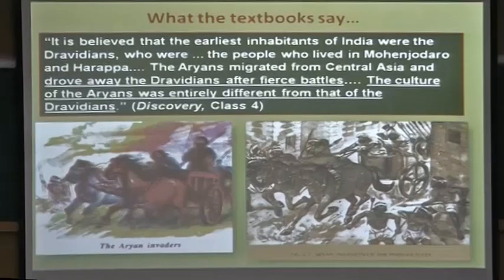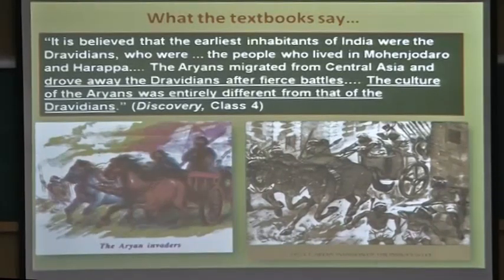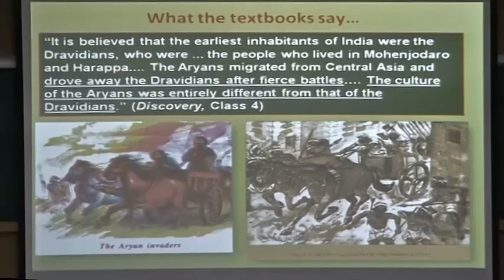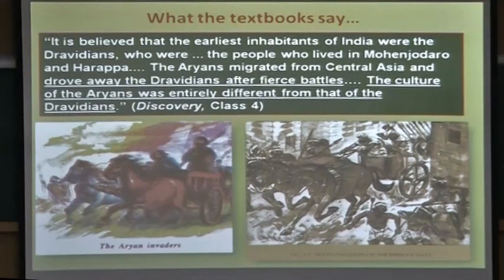What students learn — you have to imagine the psychology of a class 4 child — is: first, the earliest inhabitants of India were the Dravidians (though the word Dravidian is never defined); second, the Aryans migrated from Central Asia and drove away the Dravidians after fierce battles; third, the culture of the Aryans was entirely different from that of the Dravidians. A Tamilian child naturally builds up resentment against those 'wicked Aryans' who slaughtered their ancestors.